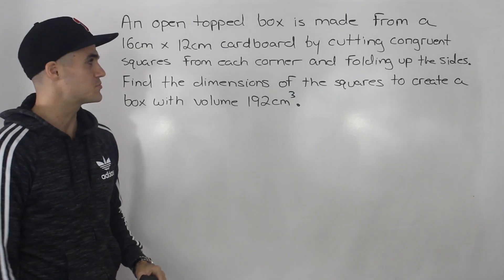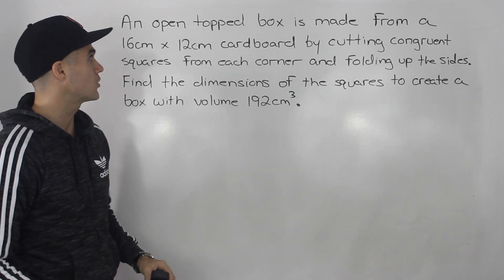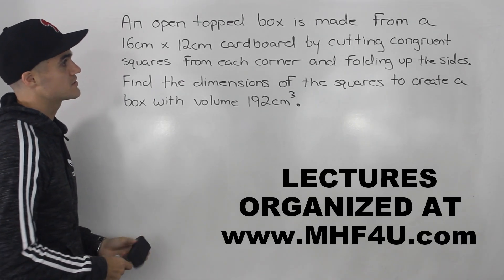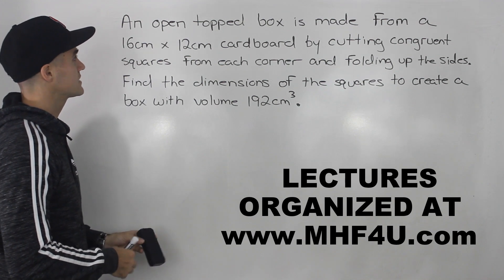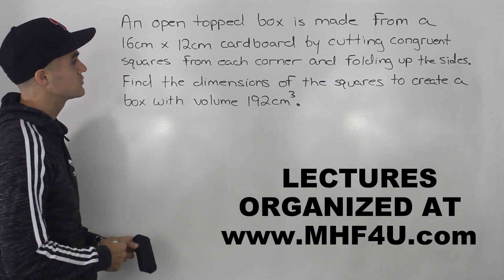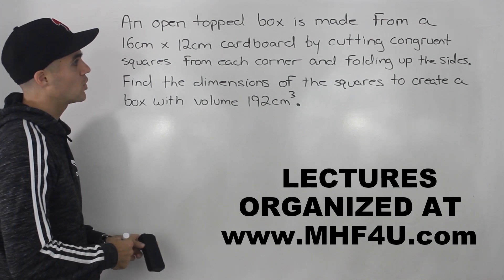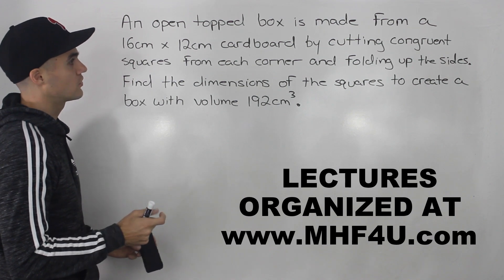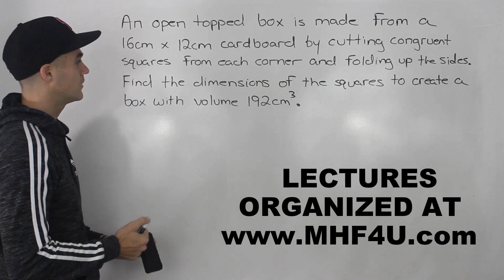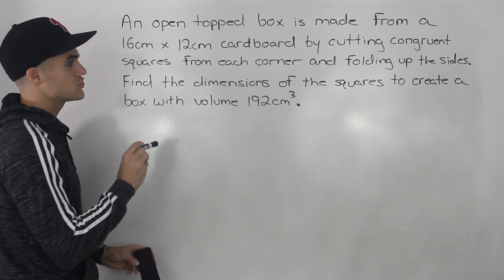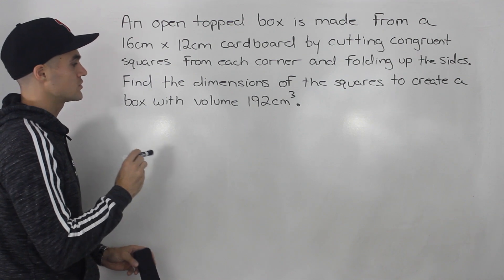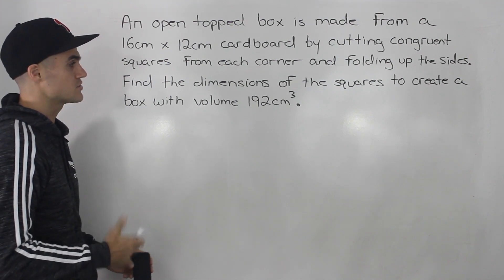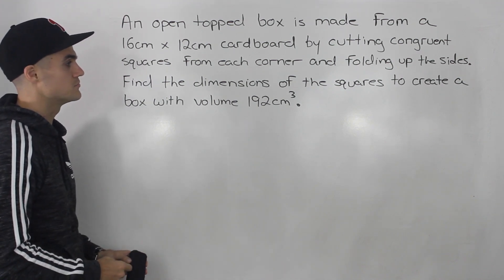What's up everybody, welcome back. Let's move on to a word problem. An open top box is made from a 16 centimeter by 12 centimeter cardboard by cutting congruent squares from each corner and folding up the sides. Find the dimensions of the squares to create a box with a volume of 192 centimeters cubed.